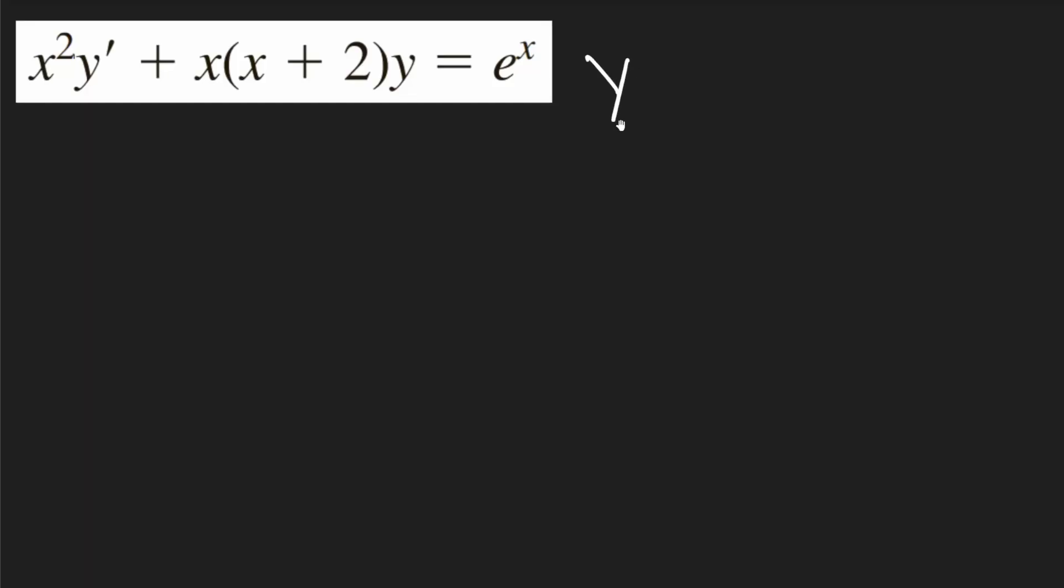In this problem, I need to get the equation in the correct form. The correct form is y prime plus p of x times y equal to q of x. Because there's an x squared in front of the y prime, I have to divide all the terms by x squared to get it in the correct form.